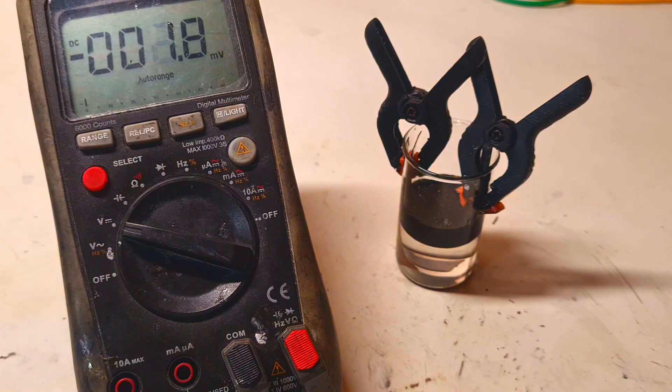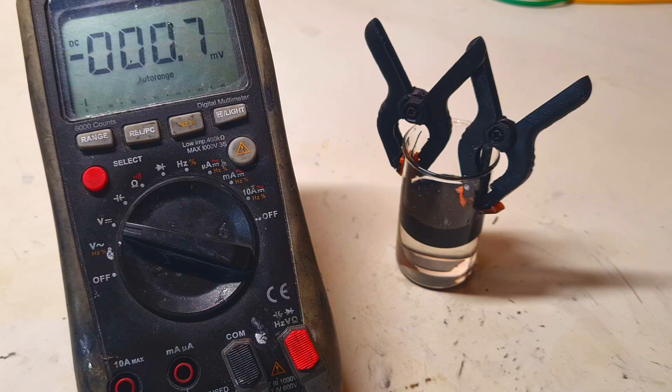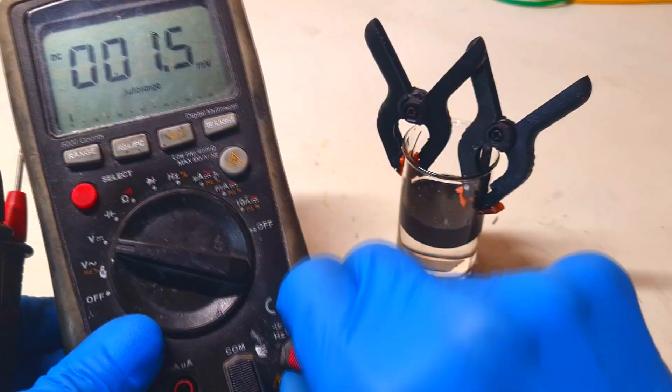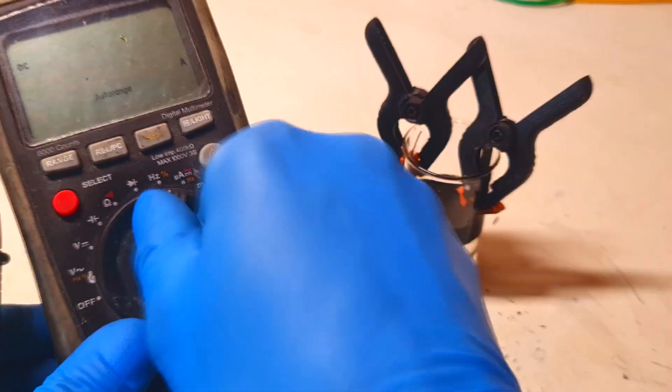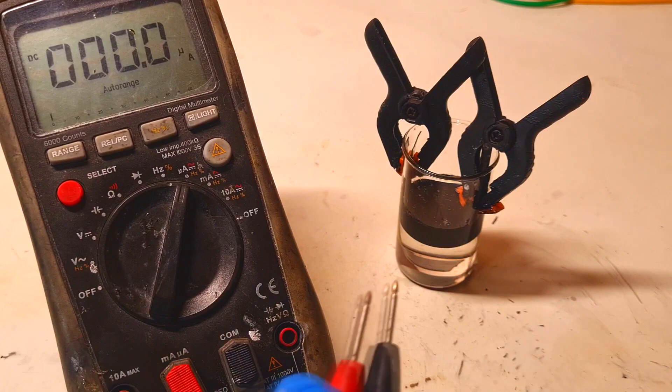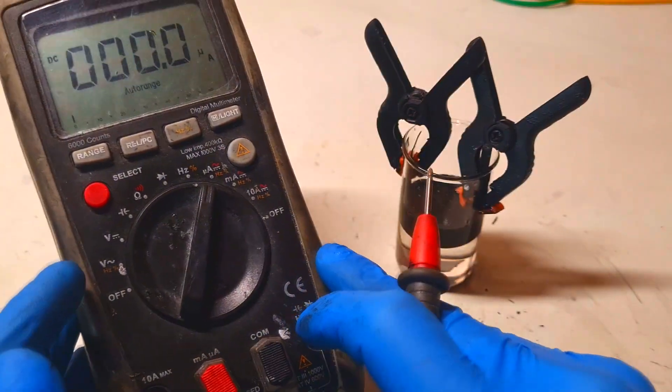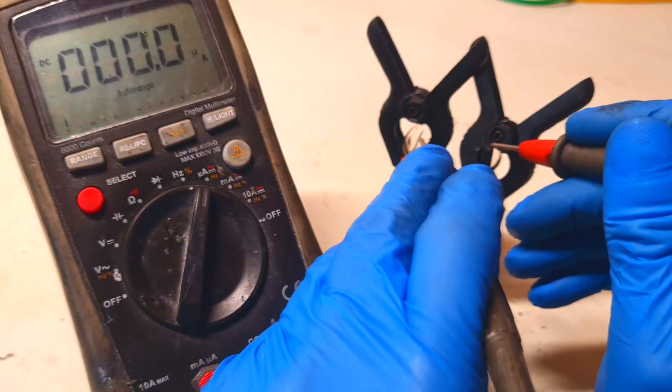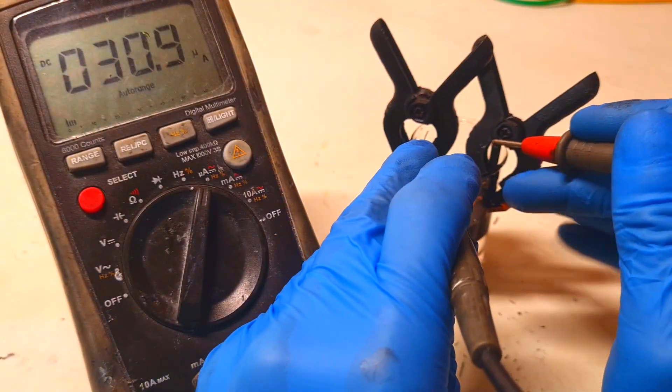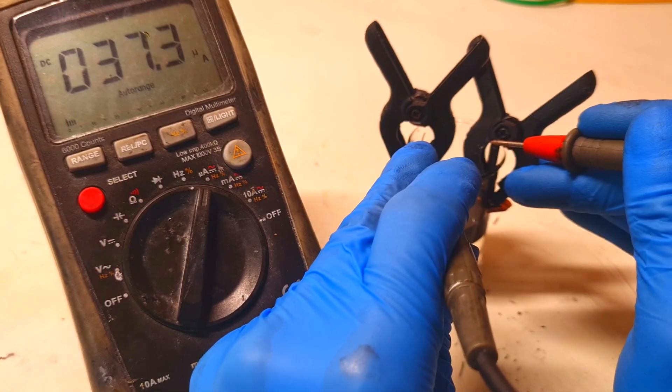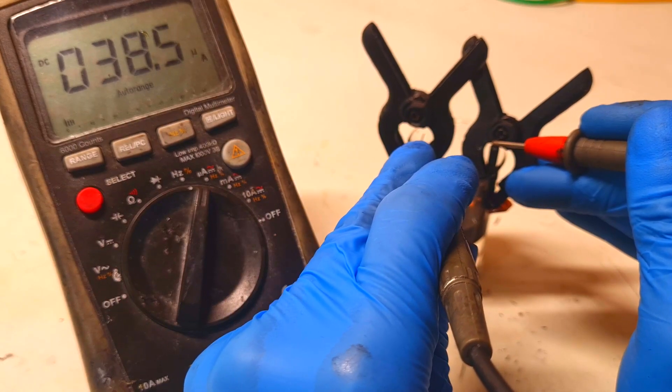But like I said before, this kind of separator-free cell is not really powerful, because if I switch to the current, then you will see that the current output is really really weak. And I get around 37 microamps.